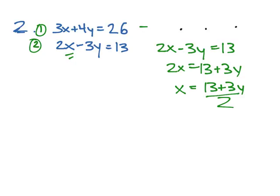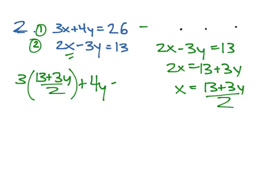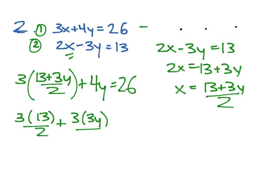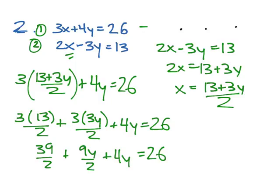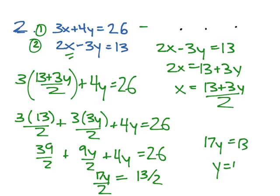Now we can plug that into the first equation. We've got 3 times (13 plus 3y) over 2, plus 4y, is equal to 26. Multiplying it out gives us 39 over 2 plus 9y over 2 plus 4y is equal to 26. So 9y over 2 plus 4y is 17y over 2, and 26 minus 39 over 2 is 13 over 2. So we've got 17y is equal to 13, meaning y is equal to 13 over 17.